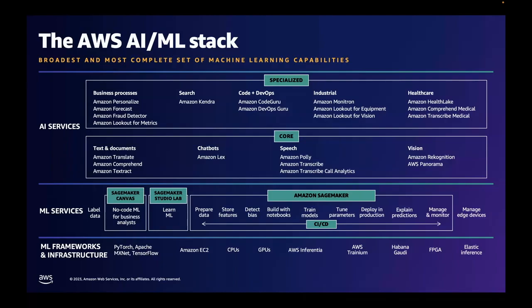The top layer, which we call AI services, will come as the biggest surprise for those people who think of us only as infrastructure as a service. Here we have some very impressive APIs for vision, speech, text search, chatbots, and even moving up one more level to the capabilities that include our portfolio of purpose-built services for industrial use: Amazon Monitron, Lookout for Equipment, and Lookout for Vision. All of these are based on Amazon's own internally developed capabilities.